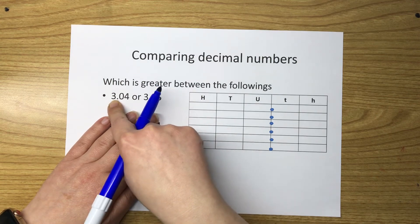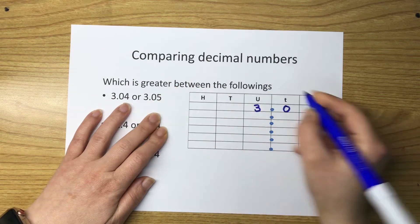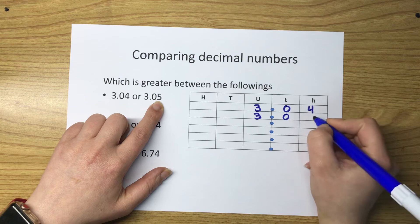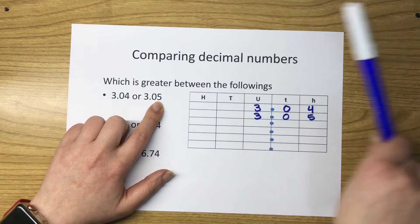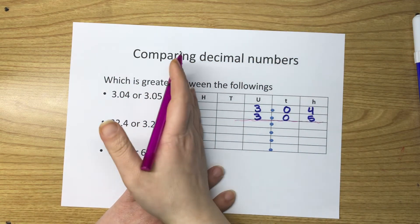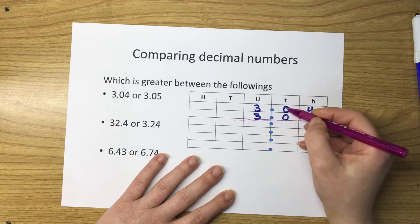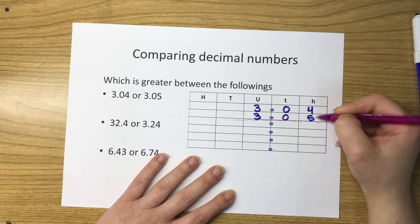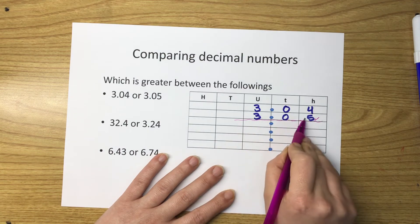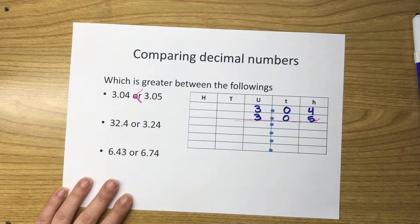There is three in the units, zero in the tenths, four in the hundredths. The next number: three in the units, zero in the tenths, and five in the hundredths. To compare, you start from the largest place. The units: three and three are equal, so we move on. The tenths: zero and zero are equal. In the hundredths there is a difference — four and five — so five is more. Therefore, three point zero five is greater than three point zero four.